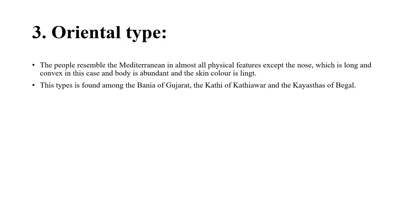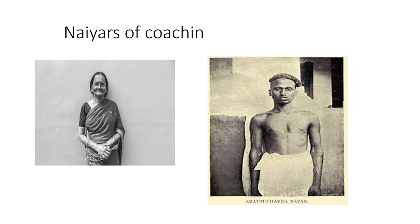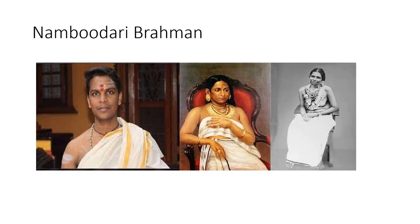The third subtype is the Oriental type. Oriental people resemble Mediterranean in almost all features except the nose, which is long and convex. Body hair is abundant and skin color is light. Banias of Gujarat, Khatris of Kathiawar, and Kayasthas of Bengal are examples. Pictures shown include Tamil Brahmans — note the very pointed chin — Nairs of Cochin, Nambudri Brahmans, and Khatris.